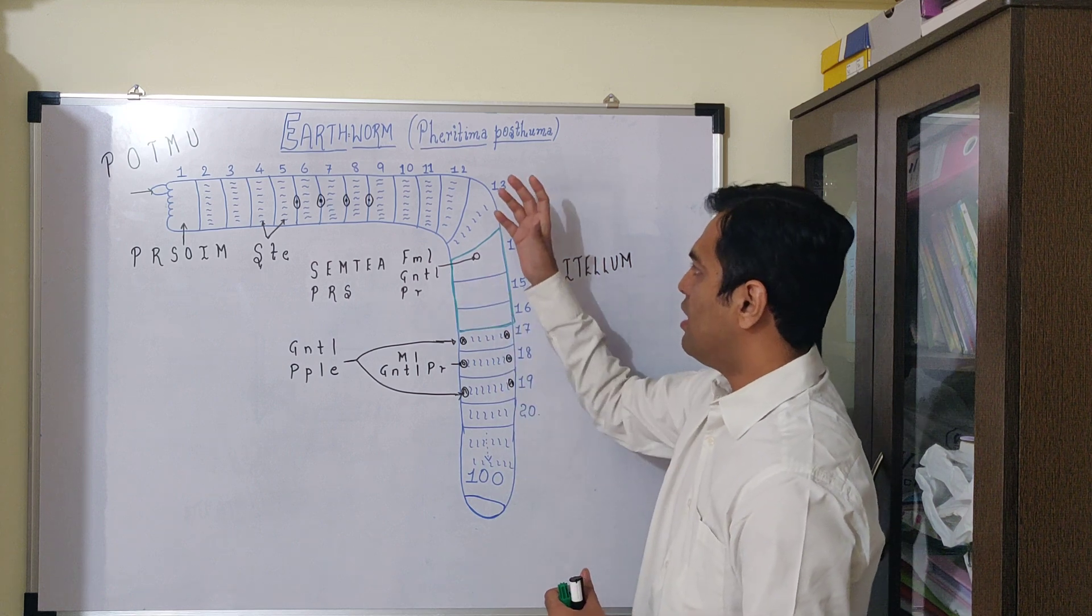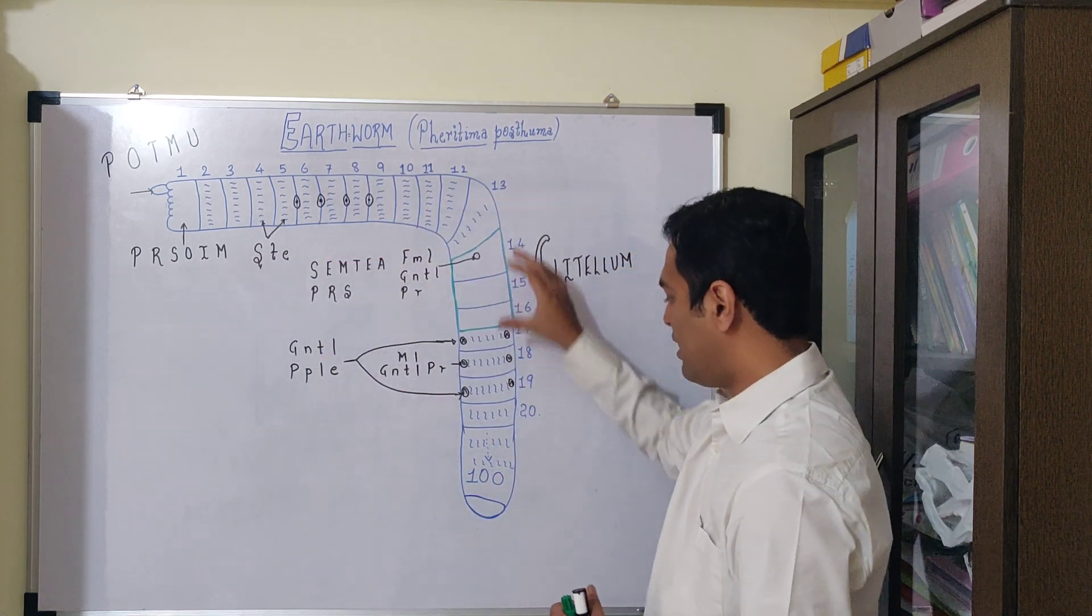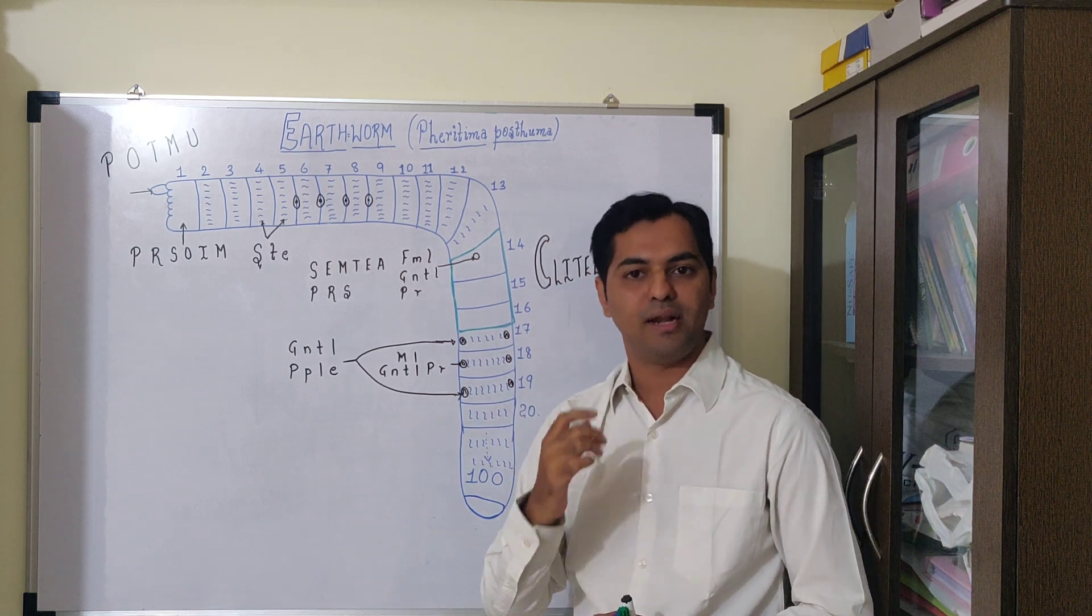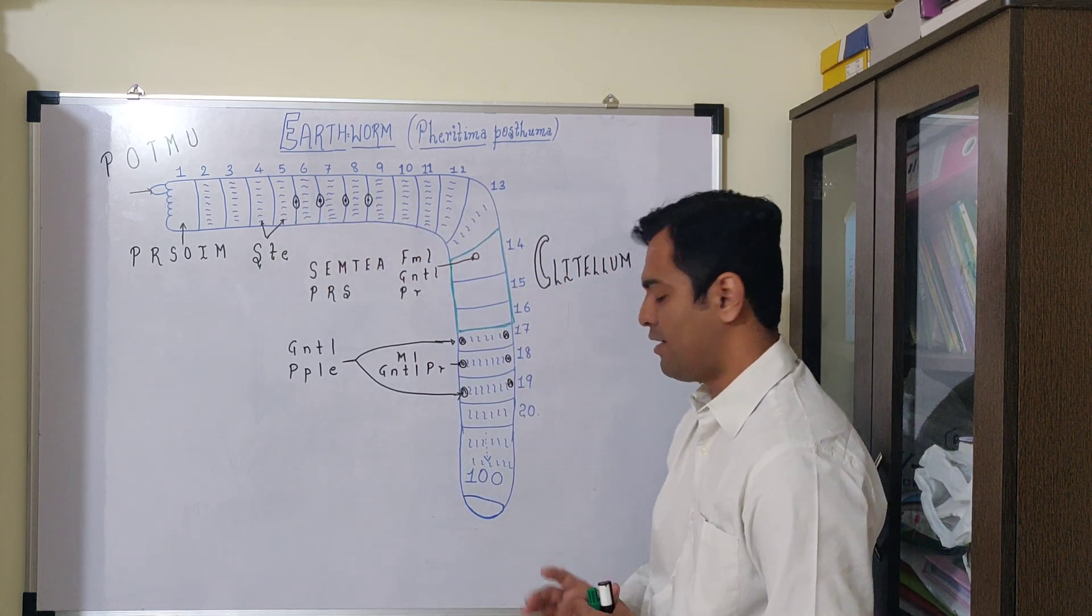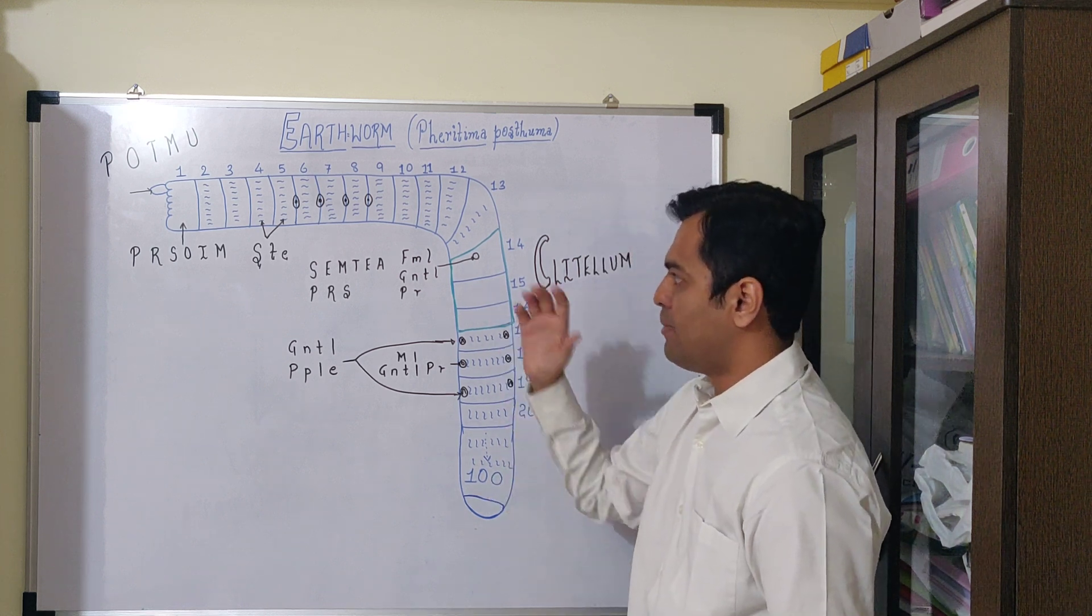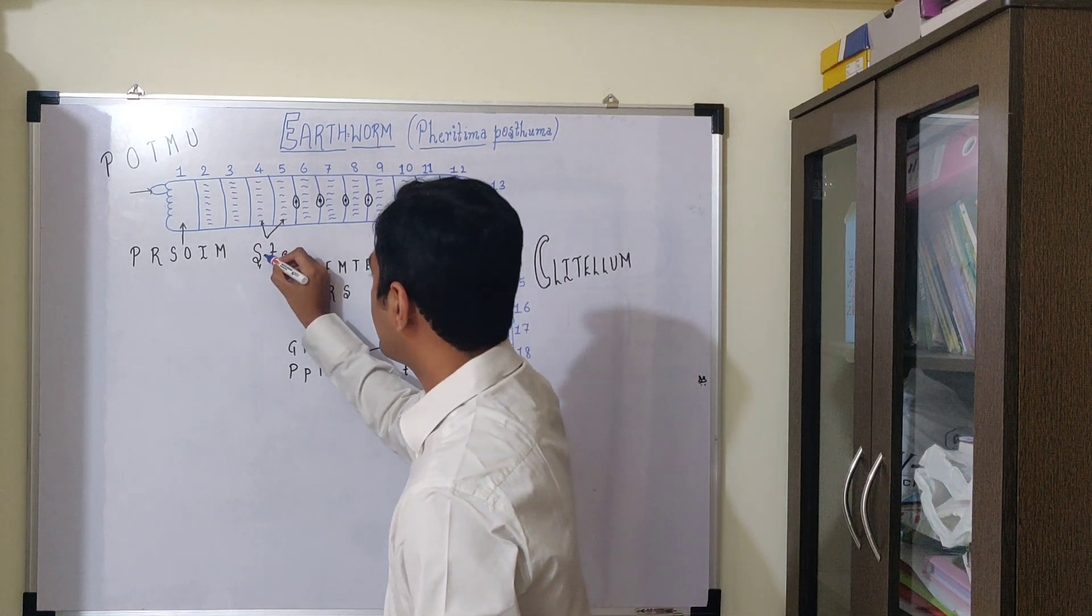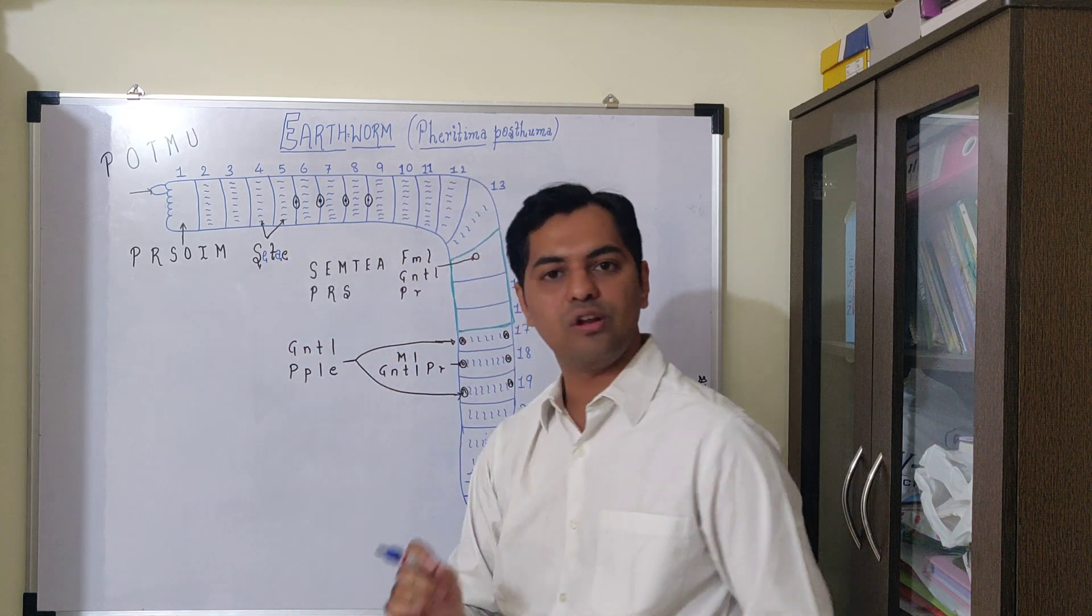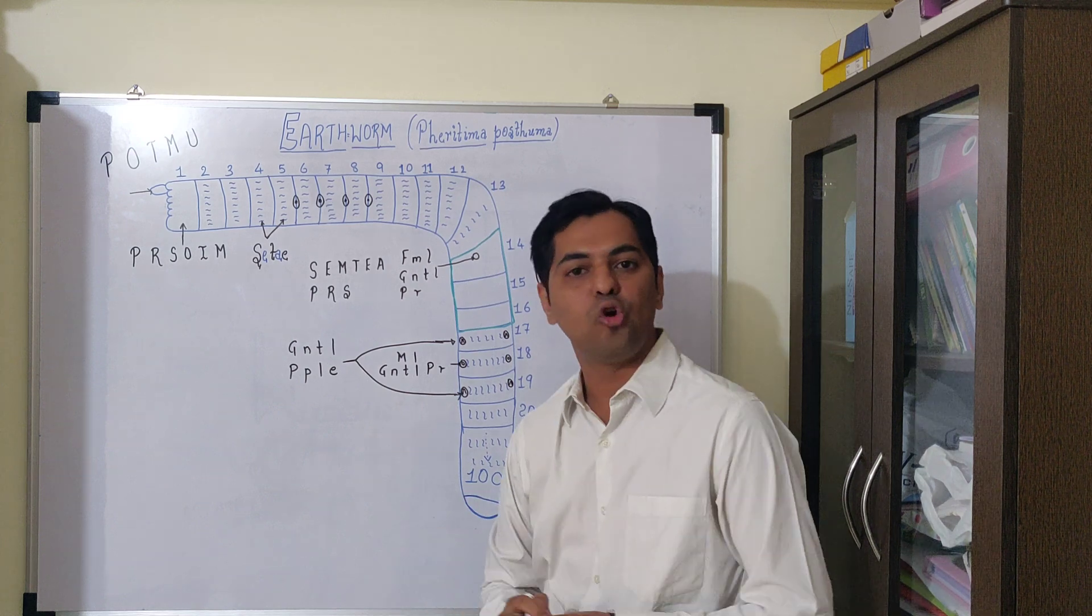The common Indian earthworm Pheretima posthuma has around 100 to 120 segments. Each segment is known as a metamer. These segments contain locomotory structures known as setae (singular: seta). These are S-shaped setae which help in locomotion.